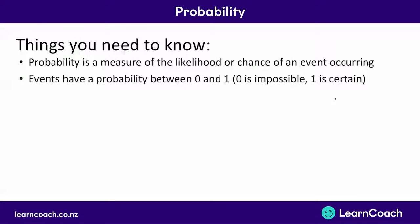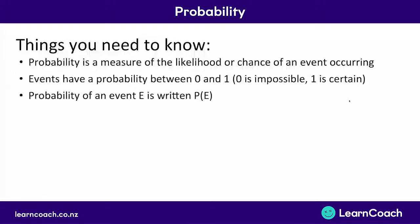You also need to know that events have a probability between zero and one, where zero is completely impossible — there's no chance it could occur — and one is you're 100% certain. You need to know that probability can be written with a P standing for probability, and in brackets you can write what the probability is about.